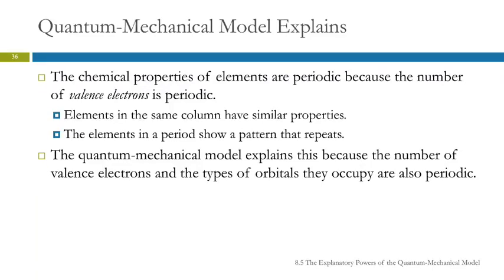The quantum mechanical model explains many things we have observed. The chemical properties of elements are periodic because the number of valence electrons is periodic. In the same column of the periodic table, elements have similar properties and the same number of valence electrons.